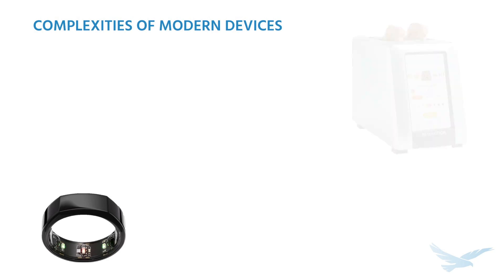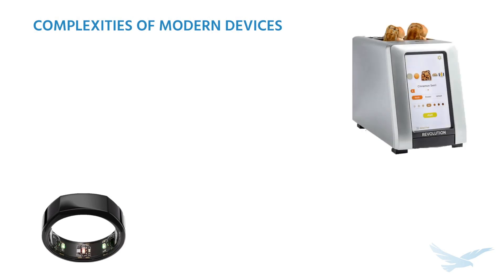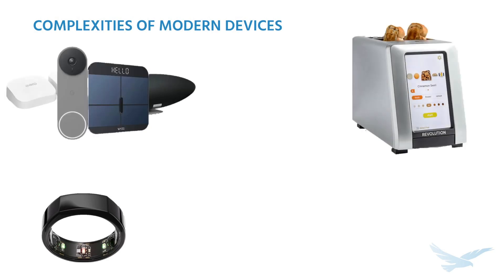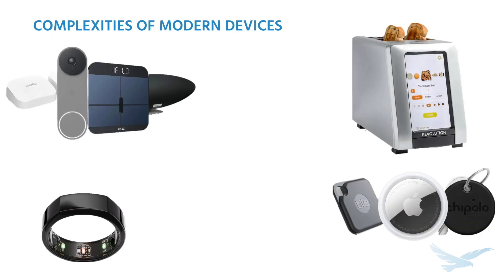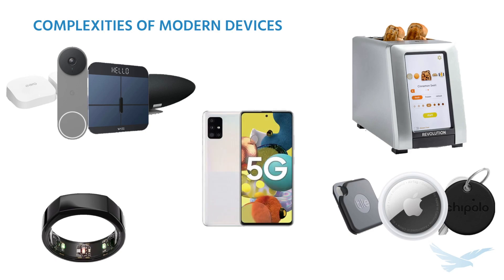From wearables to toasters, just about everything has some level of connectivity now. Most small consumer electronics, such as cell phones, trackers, and smart home devices, perform complex functions but have little room for antennas and advanced electronics.